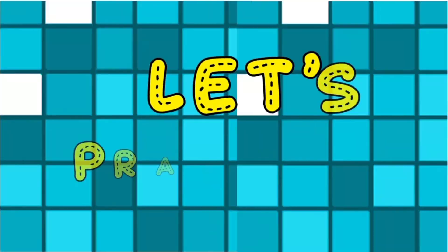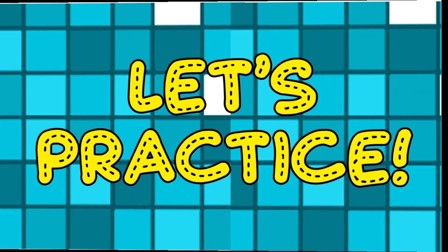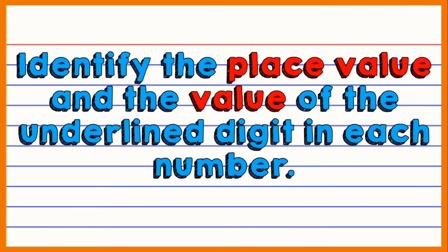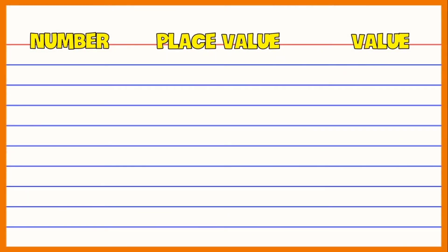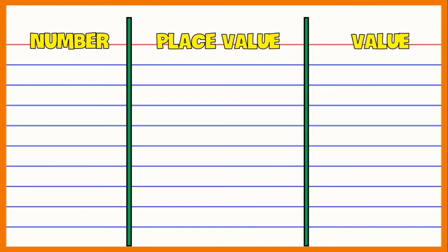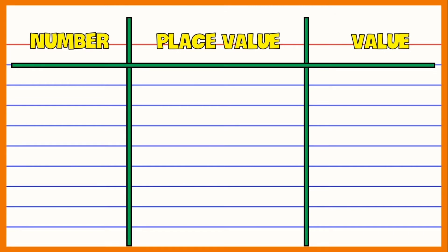Now, let's have some practice. In our practice, you're going to identify the place value and the value of the underlined digit in each number. In your home, get a sheet of paper or a whiteboard and divide it into 3 columns to put your answers. Are you ready? Alright! For our first number, 3,712 — identify the place value and the value of the digit 3. Go!